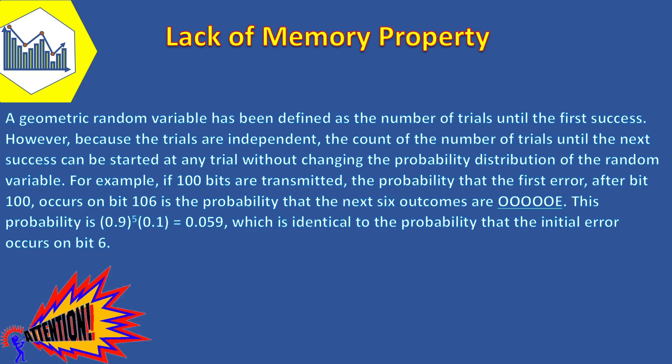For example, if 100 bits are transmitted, the probability that the first error after bit 100 occurs on bit 106 is the probability that the next six outcomes are OOOOOE and this probability is equal to 0.9 to the power of 5 times 0.1, which is identical to the probability that the initial error occurs on bit number six. The implication of using a geometric model is that the system presumably does not wear out. The probability of an error remains constant for all transmissions. In this sense, the geometric distribution is said to lack any memory.